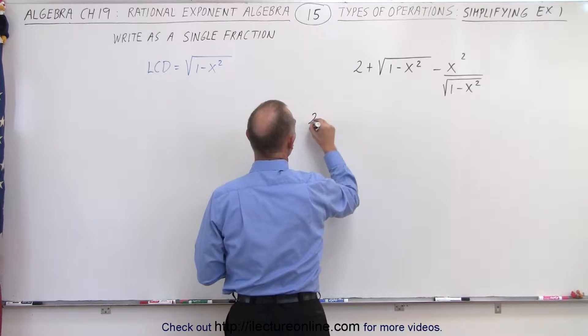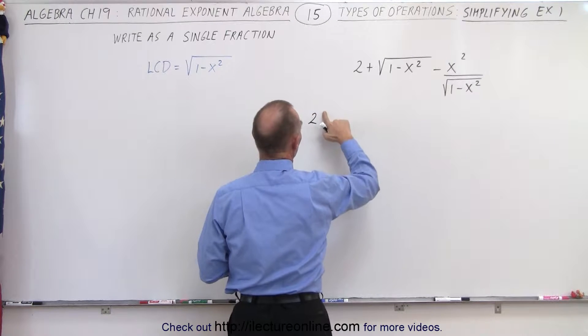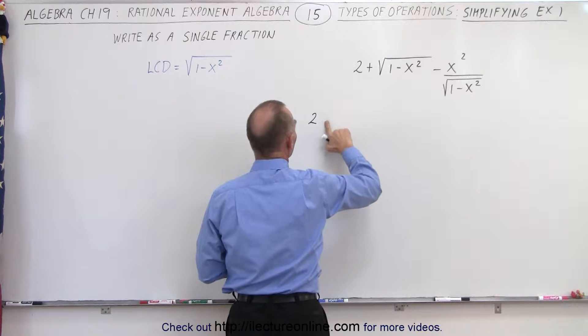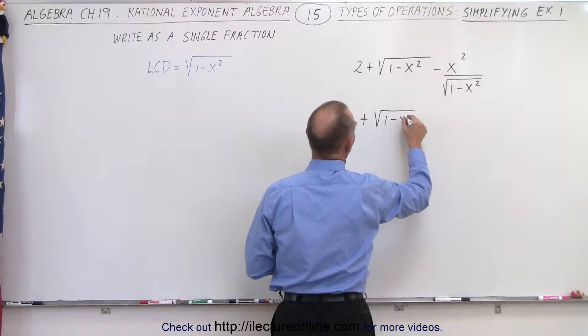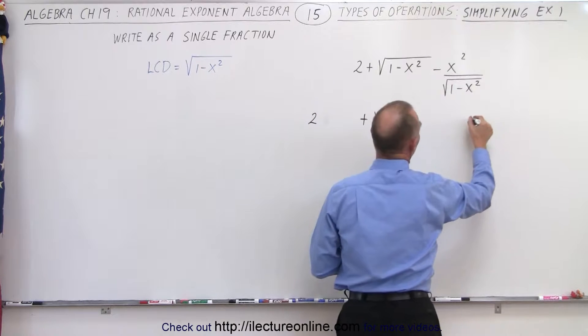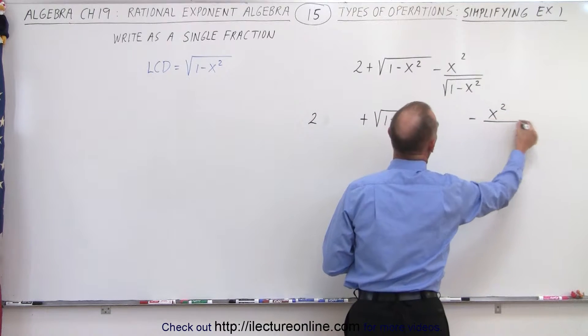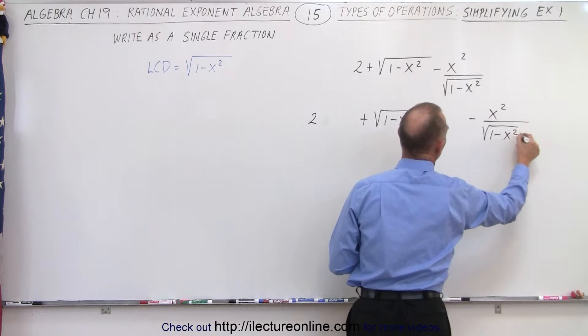So this becomes 2, plus the square root of 1 minus x squared, and then minus x squared divided by the square root of 1 minus x squared.